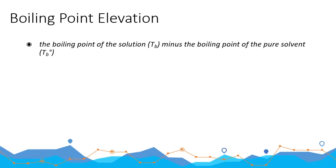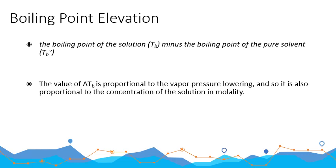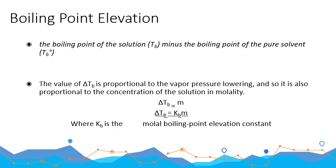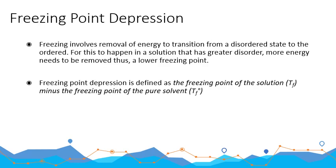The boiling point elevation is defined as the boiling point of the solution, T_B, minus the boiling point of the pure solvent, T_B°. The value of delta T_B is proportional to the vapor pressure lowering and also proportional to the concentration of the solution in molality. Removing the proportionality symbol introduces the constant K_B, giving the equation: delta T_B equals K_B times molality, where K_B is the molal boiling point elevation constant, or ebulioscopic constant.